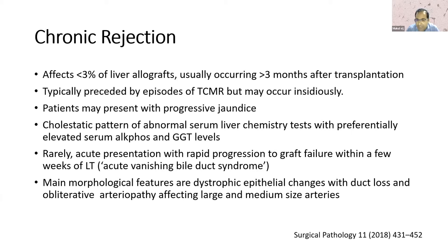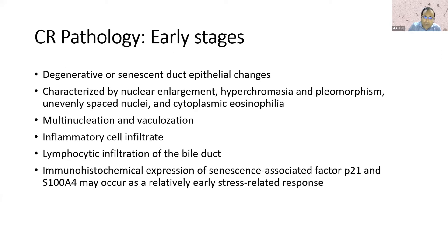Rarely, you can have acute vanishing bile duct syndrome, which is extremely rare now, but you can still rarely see it. The main morphological features — the diagnostic duo — are dystrophic epithelial changes in the bile duct with duct loss, and obliterative arteriopathy, which affects large and medium-sized arteries. In early stages, you see degenerative or senescent duct epithelial changes characterized by nuclear enlargement, hyperchromasia, pleomorphism, multinucleation, cytoplasmic eosinophilia, and vacuolization.